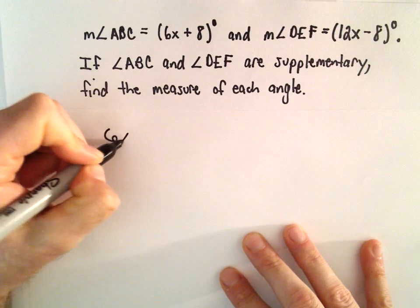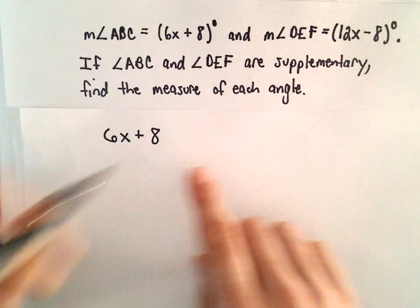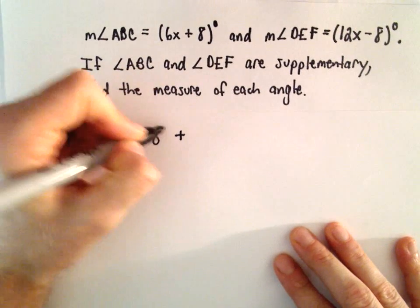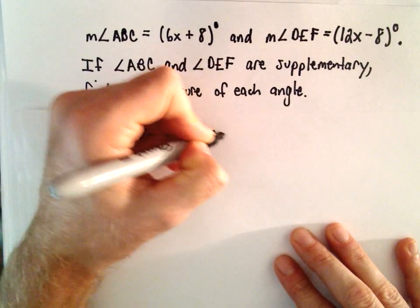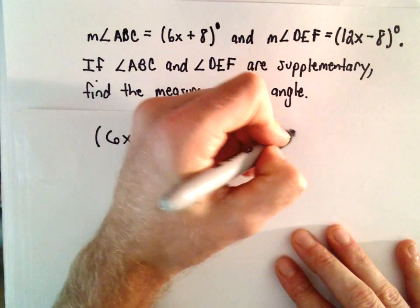So if we take the measure of one angle, 6x plus 8, and we add to it the measure of the other angle, which is 12x minus 8, that's going to have to equal 180 degrees.